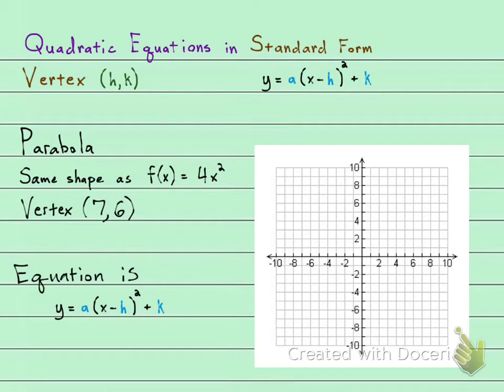So my a is gonna be 4, y equals 4(x minus h)² plus k, and then I really just need to drop in that h and the k. So I'm gonna label this vertex h and k.